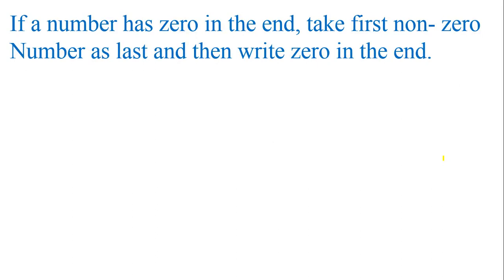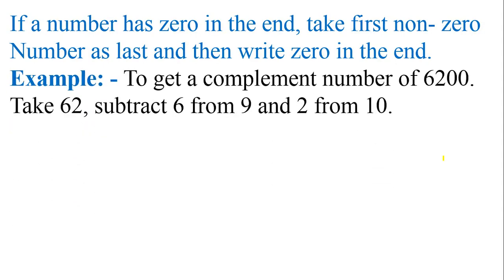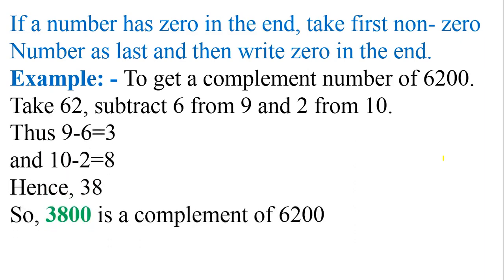Let me show one more example. Now you have 6,200. How do you get the complement number? Once again, take the non-zero digits: 6 and 2. Subtract 9 minus 6 to get 3, and 10 minus 2 to get 8. So you get 38, and then write the two zeros at the end: 3, 8, 0, 0. So 3,800 is the complement of 6,200. You can verify: 6,200 plus 3,800 equals 10,000. Very simple.